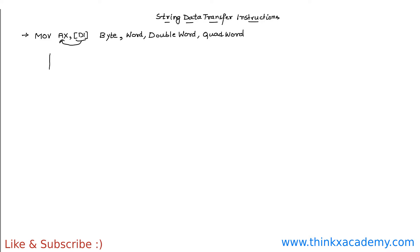Diagrammatically, if I want to show you what a string represents — a string can represent a sequence of bytes, words, double words, or quad words. Let's suppose this is a string of bytes where each block represents one single byte. A sequence of such blocks will form a string.